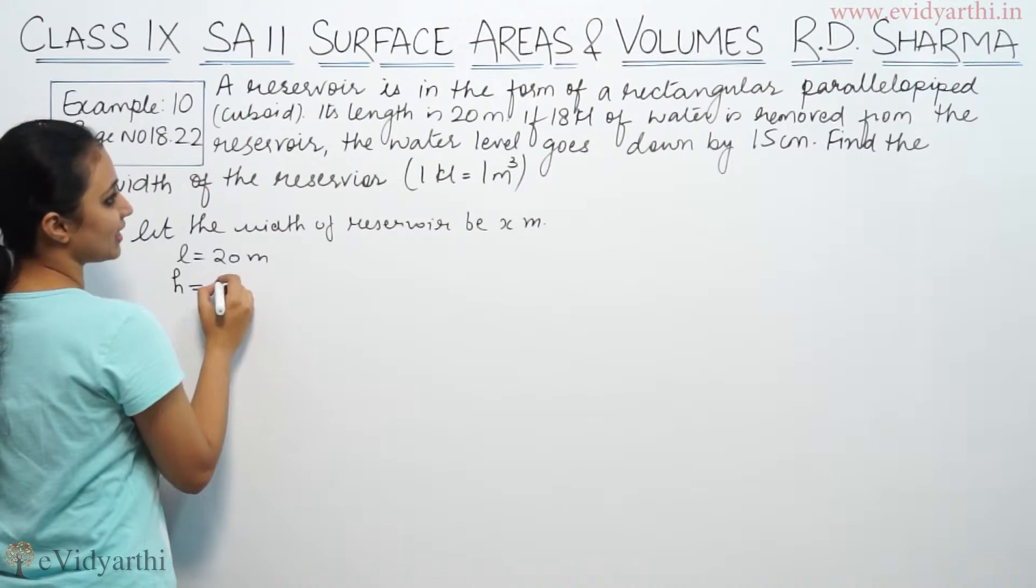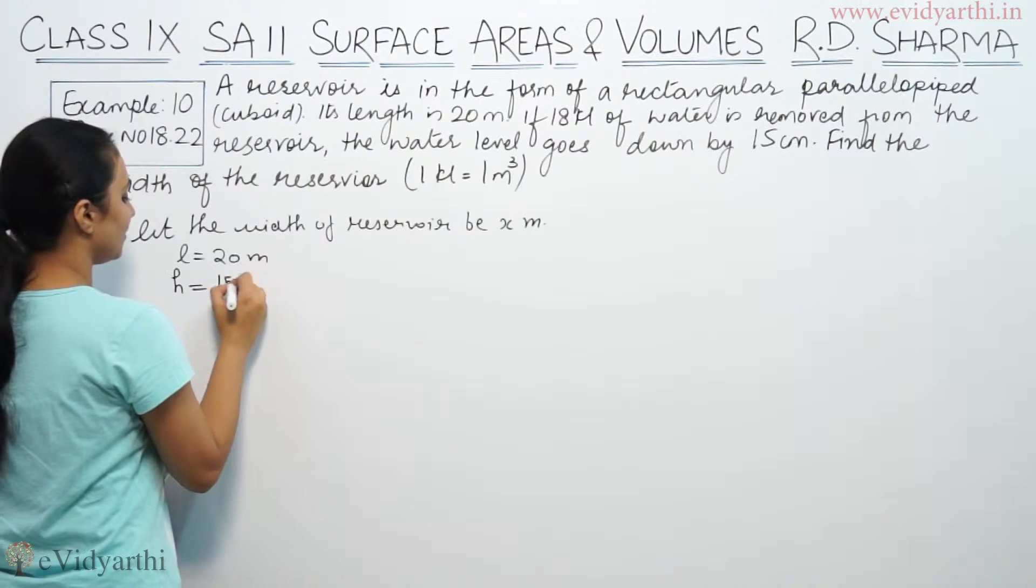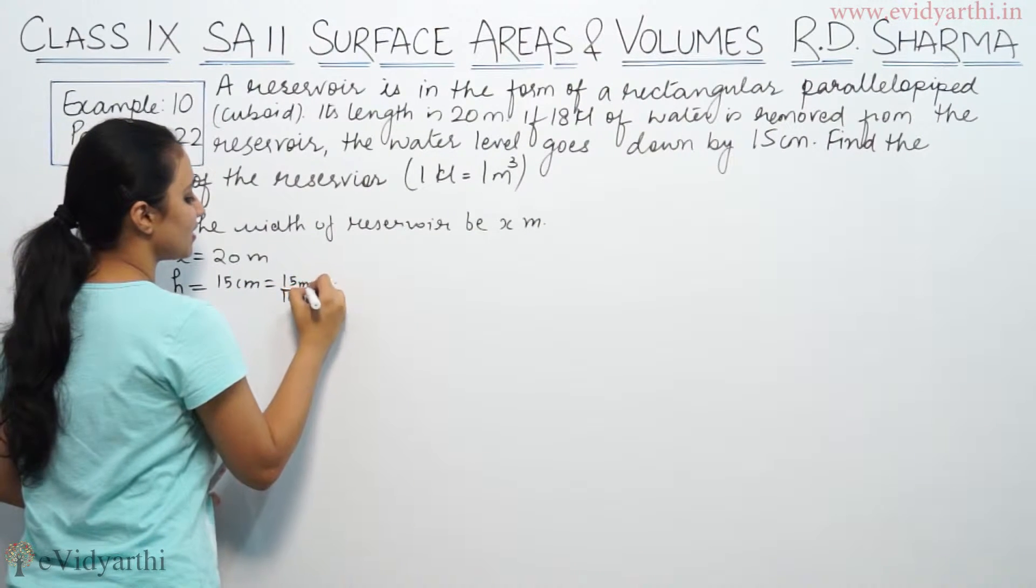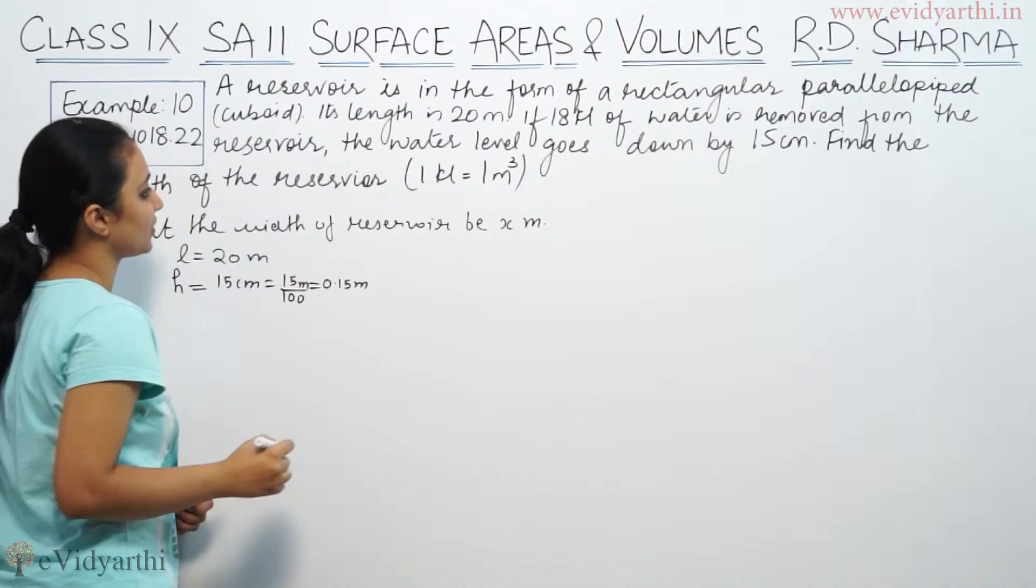It says water level goes down by 15 centimeters. That means height is given. This is 15 centimeters, that means 15 by 100 meters, 0.15 meters.